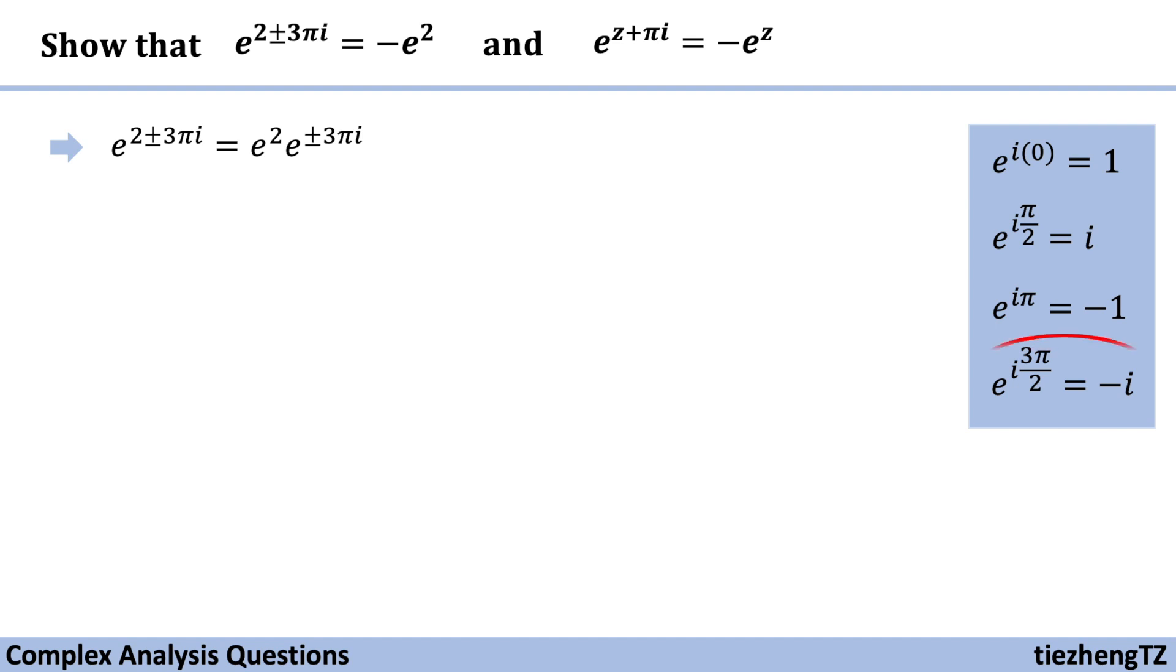So in this case, we are going to use e to the power of pi i equals minus 1. And we know the equation has a period of 2 pi.